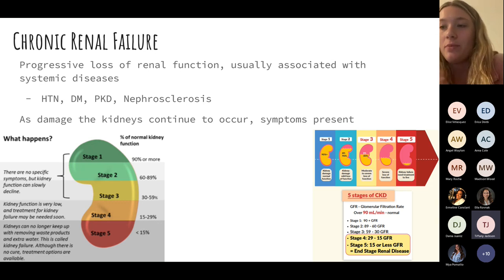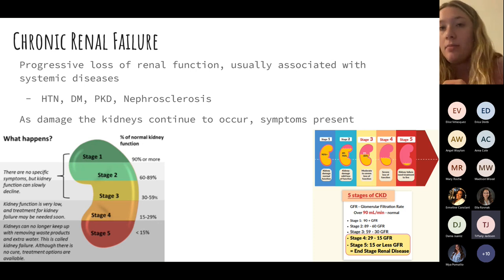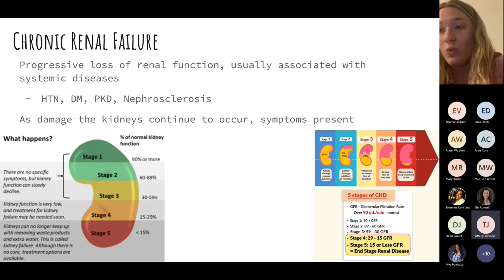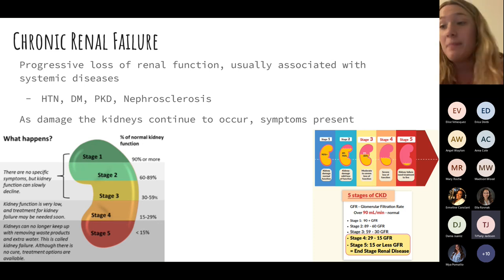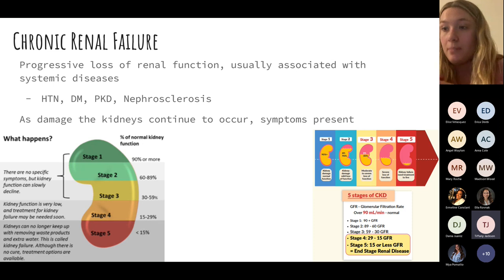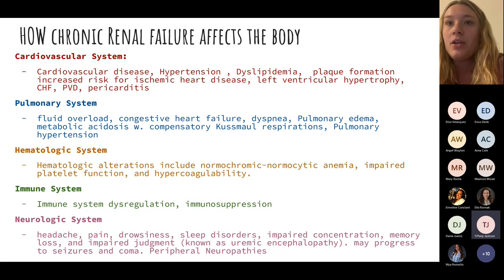Chronic renal failure is a progressive loss of renal function, associated with systemic diseases like unmanaged hypertension, diabetes mellitus, and polycystic kidney disease. It's classified stage one through five — if you move from stage one to stage two, you can never go back. Stage four or five is end-stage renal disease: kidneys cannot function, no urine production, requiring severe fluid, sodium, and potassium restrictions, and ultimately dialysis.